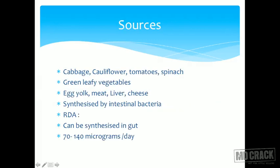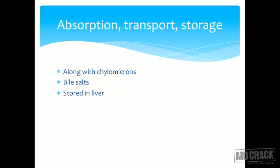Sources of Vitamin K include cabbage, cauliflower, tomato, spinach, green leafy vegetables, egg yolk, meat, liver, and cheese. It is also synthesized by intestinal bacteria. Because it is synthesized by the gut bacteria, its dietary requirement is slightly lower — approximately 70 to 140 micrograms per day.